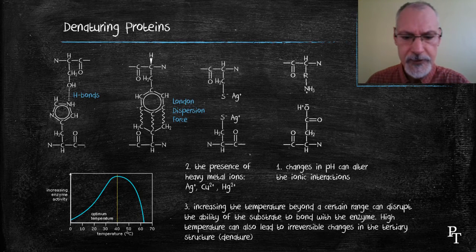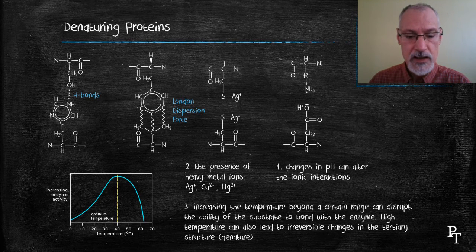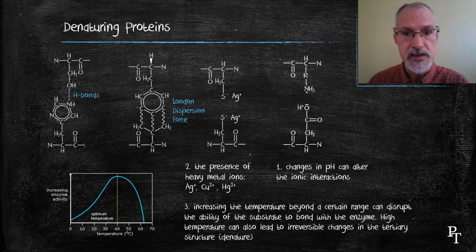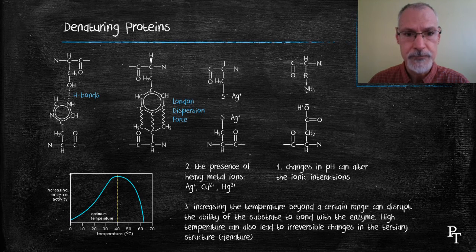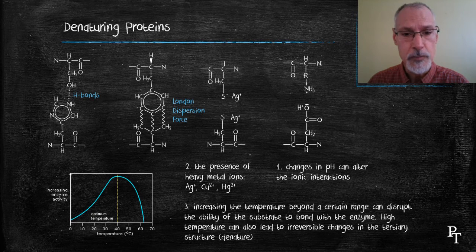You can see what happens as we increase the temperature of our particular enzyme. Initially, it speeds up the rate of reaction, as we would expect with increasing temperatures. But once we get beyond a certain point, we cause these bonds to break. The breaking of these bonds can lead to a denaturing of our protein and thereby render it useless or inactive.